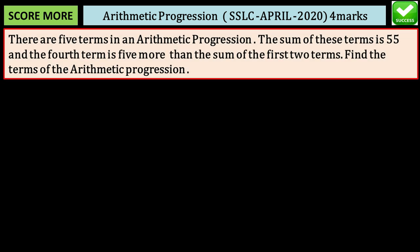There are 5 terms in an arithmetic progression. The sum of these terms is 55 and the 4th term is 5 more than the sum of the first 2 terms. Find the terms of the arithmetic progression.